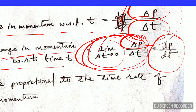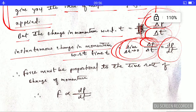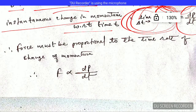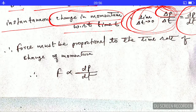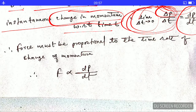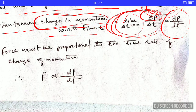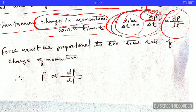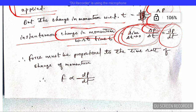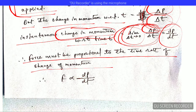The change in momentum occurred because of the force applied — because you pushed or pulled the object. Larger the change in momentum means you applied a larger force; smaller change in momentum means you applied less force. So the force must be directly proportional to the time rate of change of momentum, meaning force is proportional to dp/dt.